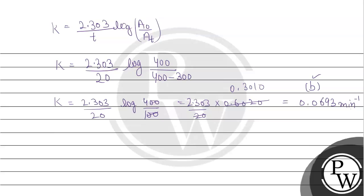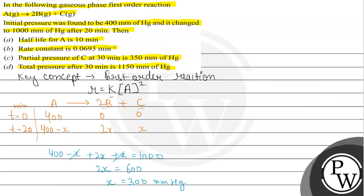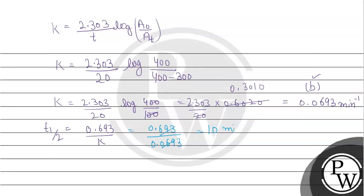By this we can see B option is absolutely correct. And according to statement A we have to find out half-life. T half formula for first order reaction is 0.693 divided by K. And K value we have already found is 0.0693. So this will get cancelled and it will be 10. So we have half life that is 10 minutes and rate constant is 0.0693 per minute. So A and B statements are correct.